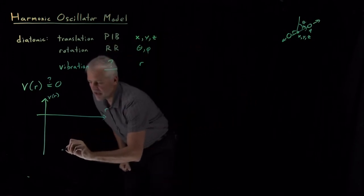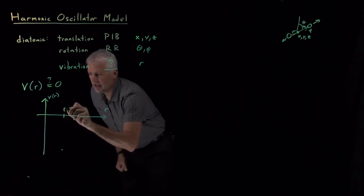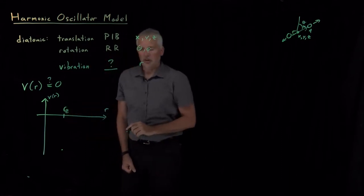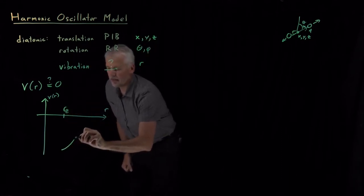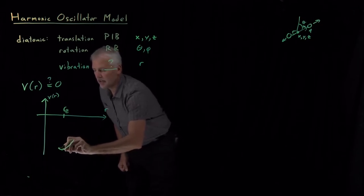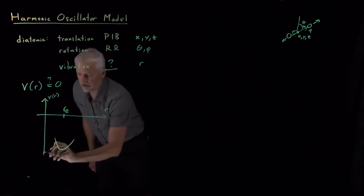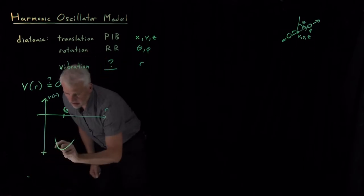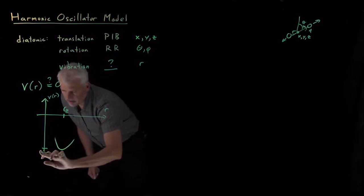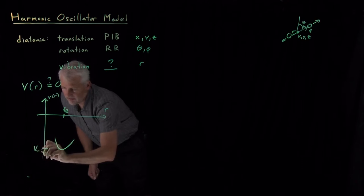So there's some energy where there's some bond length, I should say, where the energy of the molecule is lowest, and if I increase the bond length beyond that or if I decrease the bond length below that, the energy is going to go up from that point. So there's some minimum energy. I'll draw it in approximately the right place. I'll call that V sub E.